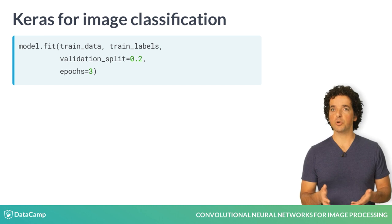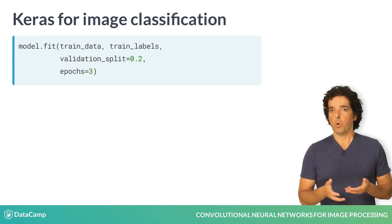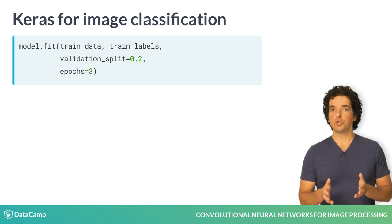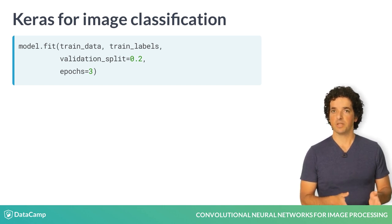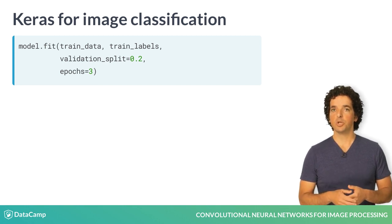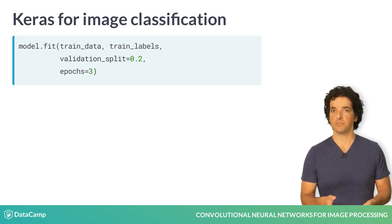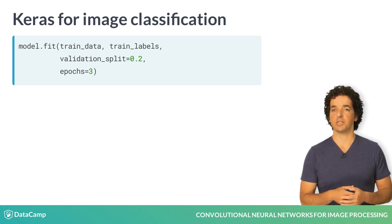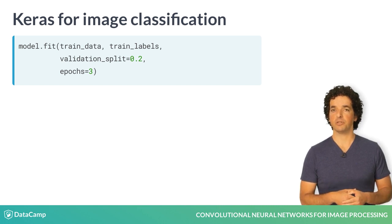How do we know that the algorithm has reached a good set of weights? We worry that the algorithm might overfit to the training data — that is, that the weights result in very small error on the training set but would not generalize well to another dataset. To avoid overfitting, we set aside a set of validation images. At the end of every epoch of training, we'll test the model on this validation set. Here, we use 20% of the images for validation by setting validation_split to 0.2.